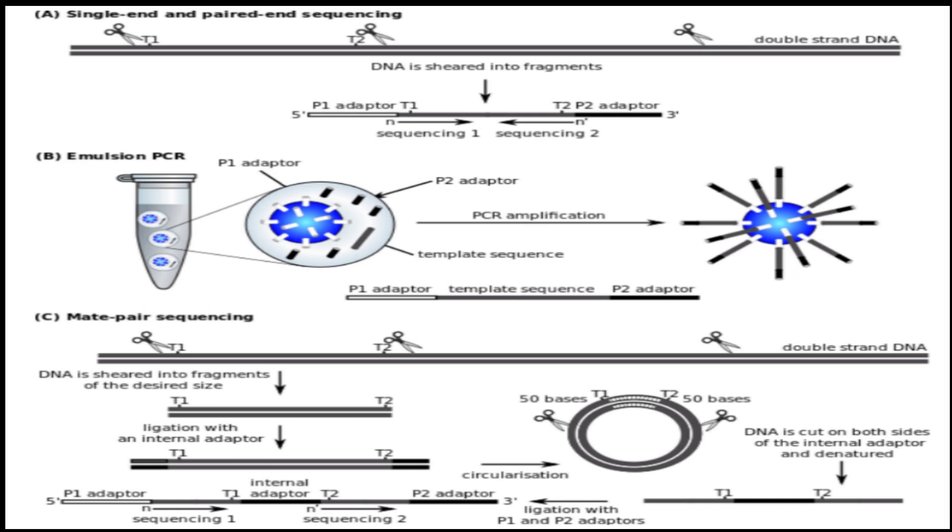Next, they attach two adapters to the fragment library and perform emulsion PCR, which produces clonal beads and amplifies the fragments.